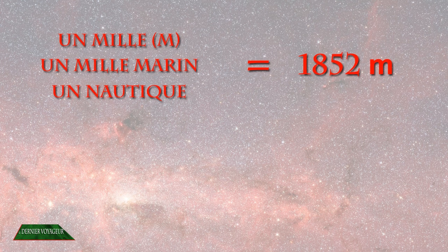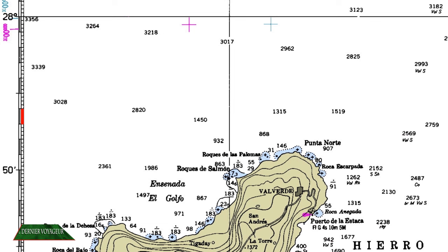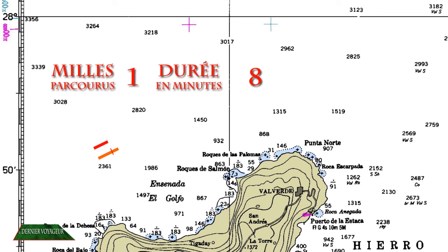À partir de cette unité de distance, nous déduisons directement une unité de vitesse, qui est le nœud. Un nœud correspond à un mille marin parcouru en une heure. Si un bateau se déplace à 8 nœuds, cela veut dire qu'il franchit 8 milles marins en une heure, ou qu'il a une vitesse d'environ 15 km par heure.